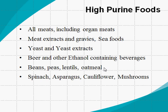Other high-purine foods include the legume family — beans, peas, lentils — oatmeal, and among vegetables: spinach, asparagus, cauliflower, and mushrooms. Patients with hyperuricemia and gout should reduce intake of these high-purine foods. Low-purine foods include beverages like coffee, tea, milk, soft drinks, tomatoes, most vegetables not listed above, wheat, and rice, which can normally be consumed.